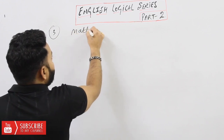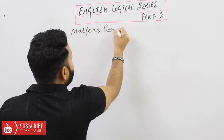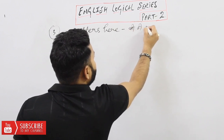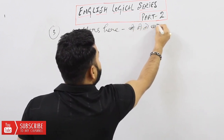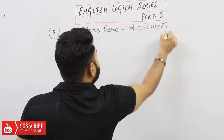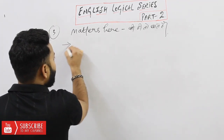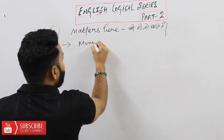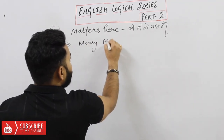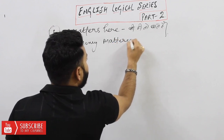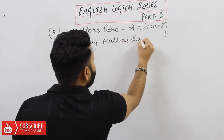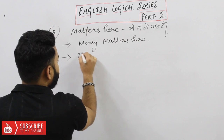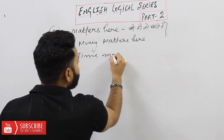Our third logical uses the word 'matters,' which means the key thing, the important thing. Like: 'Money matters here' — meaning money is the key thing here. Or: 'Time matters here.'